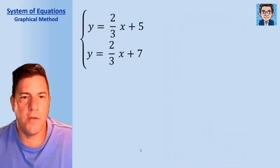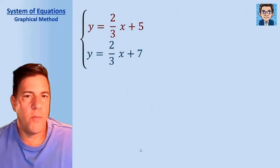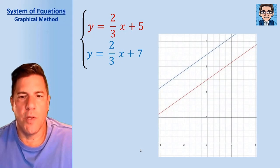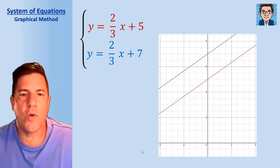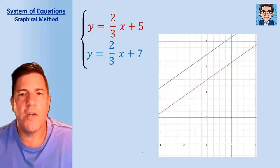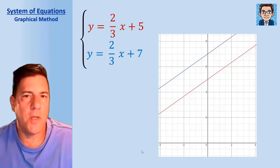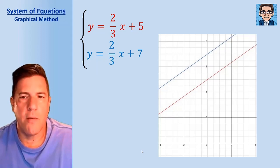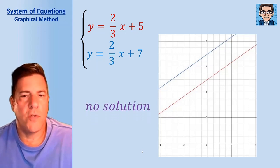Let's take a look at another system. If I graph these two — the first one in red and the second one in blue — these two never meet anywhere, so I can't find a point that's on both lines. Notice both have a slope of two-thirds; both equations have two-thirds x, so they have the same slope. Lines with the same slope are going to be parallel, so they never meet. In this situation, we have no solution.